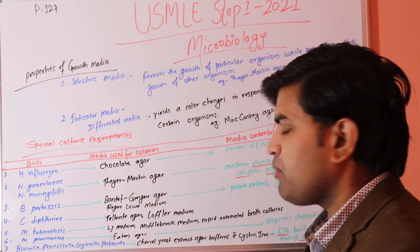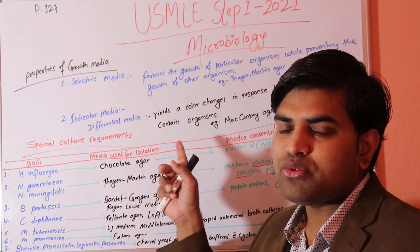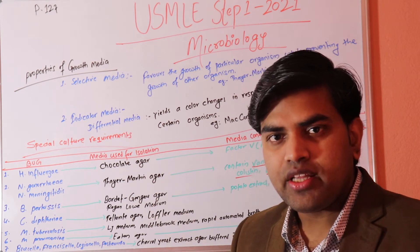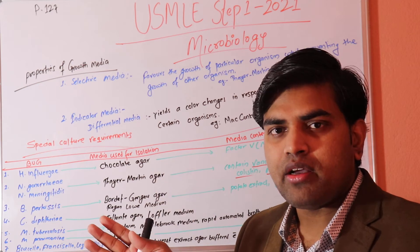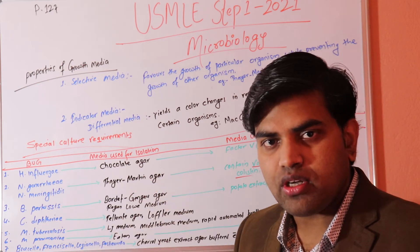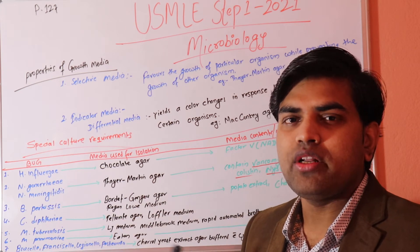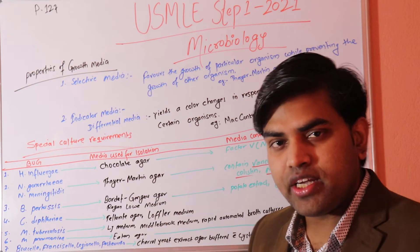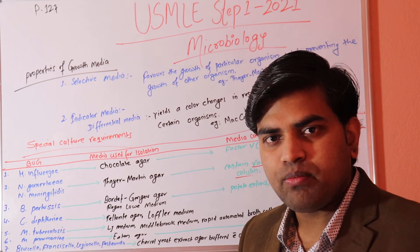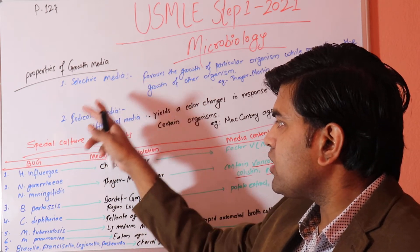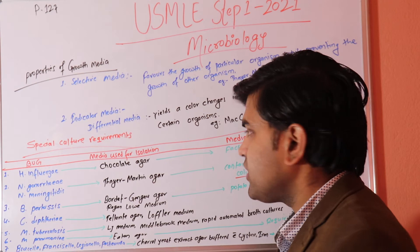On MacConkey agar, gram-negative organisms that can utilize lactose produce acid, which changes the pH of the media. An indicator in the medium then turns pink. So lactose-fermenting gram-negative rods appear pink — this is called a lactose-fermenting gram-negative rod, commonly found in enteric organisms. One media can be both indicator and selective; indicator media gives identification by color change due to pH shift.